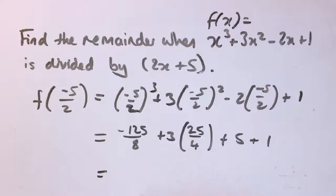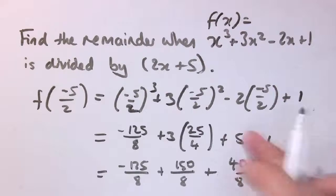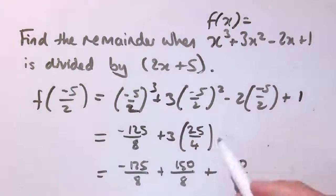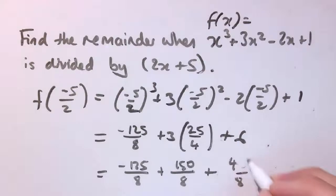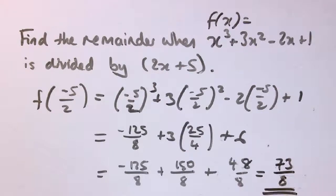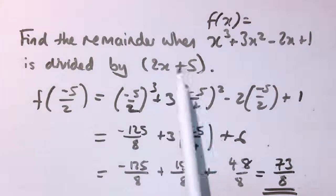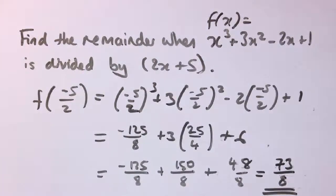I'm going to put this all over a denominator of 8. So I get 3 times 25 is 75, times it by another 2 to put it over 8, so that's 150 over 8, plus 40 over 8, and let's call 5 plus 1, 6. This is 48 over 8, so 150 minus 125 is 25, plus 48 is 73.